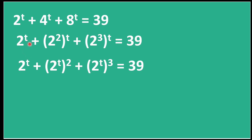So overall we can write this equation as (2^t)^2 and (2^t)^3, which is equal to 39. So why did we do this? Because we want to make something common.